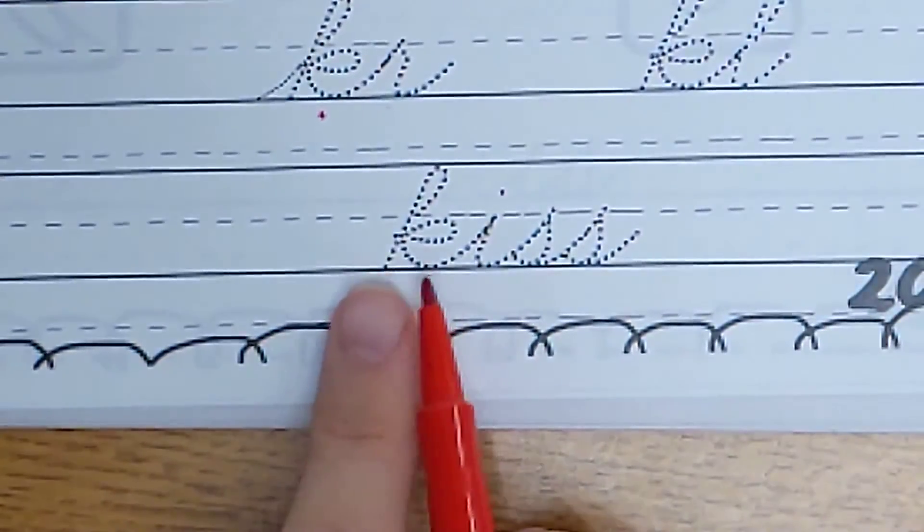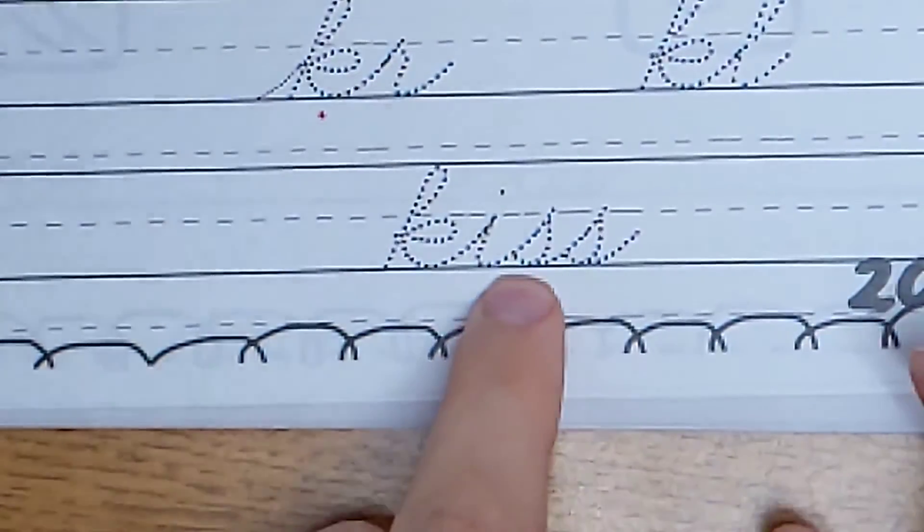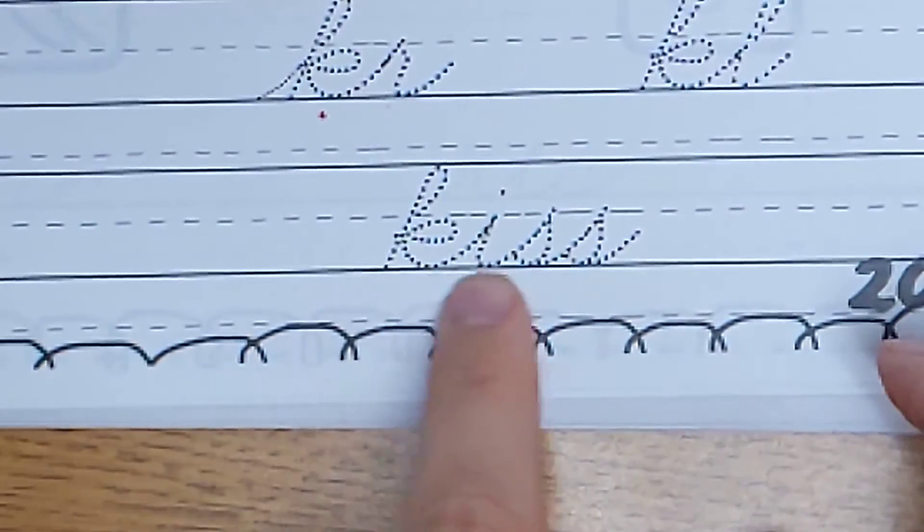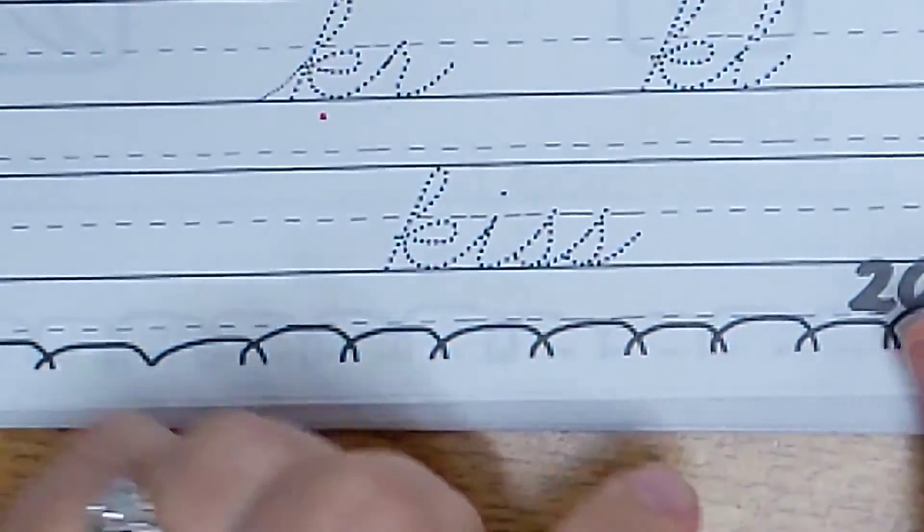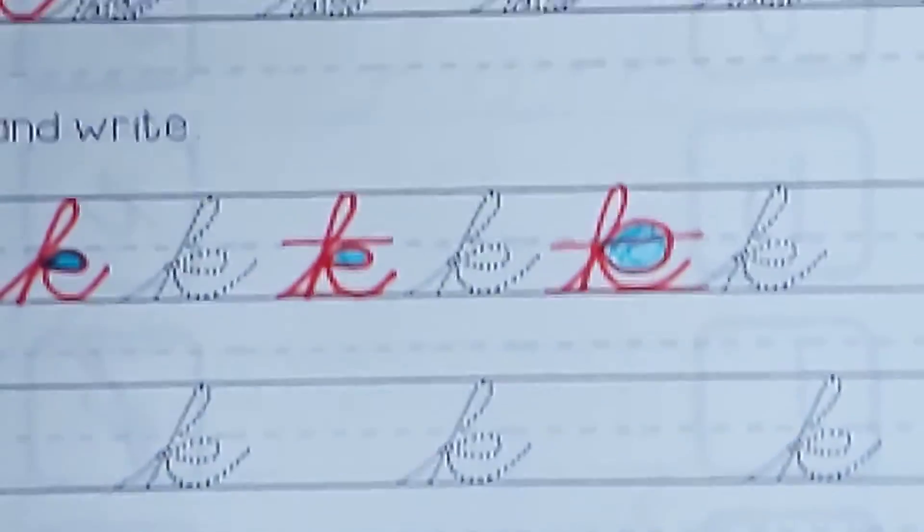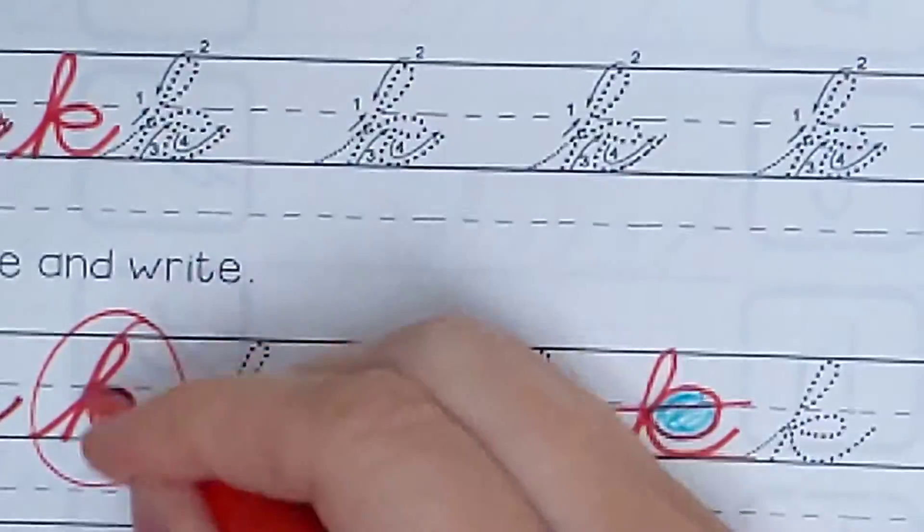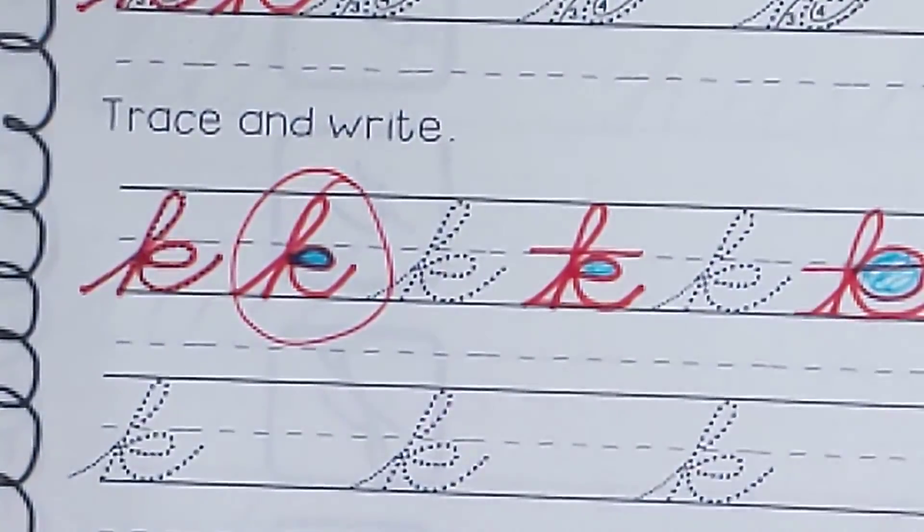And last word. K-I-S-S. Kiss. So you trace it and write it. So finish the page when you're done. Circle your most favorite K that you did. And get busy.